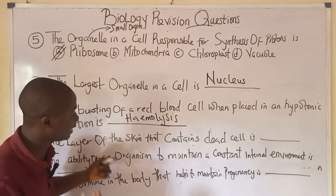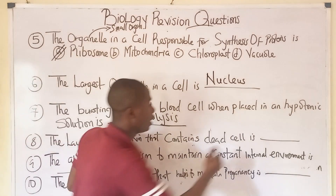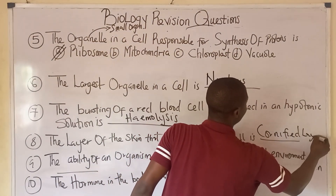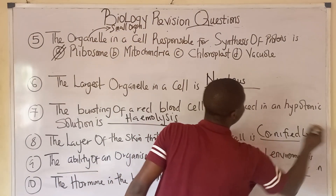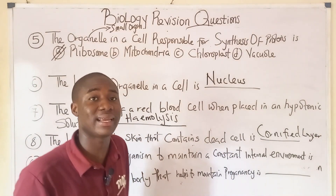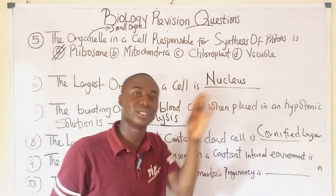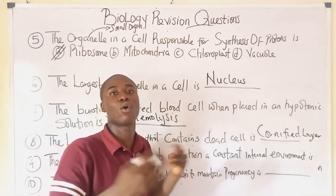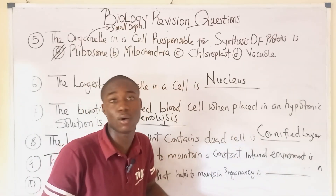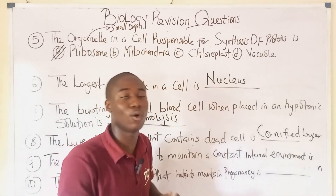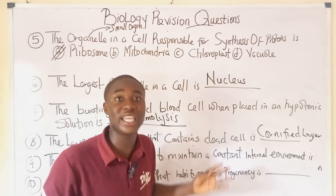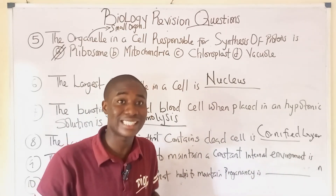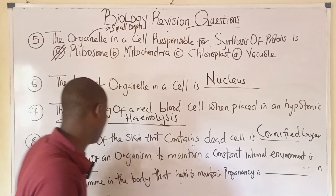Question eight: the layer of the skin that contains dead cells is the cornified layer. The skin is divided into two parts: the dermis and the epidermis. In the epidermis, we have the cornified layer which contains dead cells, the granular layer, and the Malpighian layer. The granular layer and Malpighian layer contain living cells.